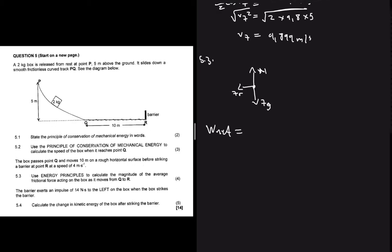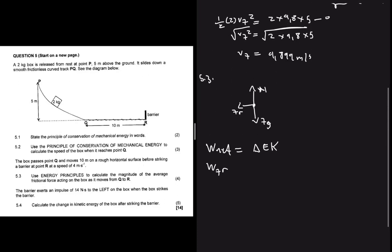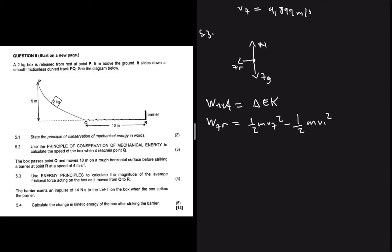Applying the work-energy theorem: W_net equals the change in kinetic energy. We already know vf and vi, so work done by friction equals the change in kinetic energy, since work done by gravity is zero and work done by the normal force is also zero. This gives us: frictional force multiplied by delta x multiplied by cos(theta) equals one-half m times vf squared minus one-half m times vi squared.